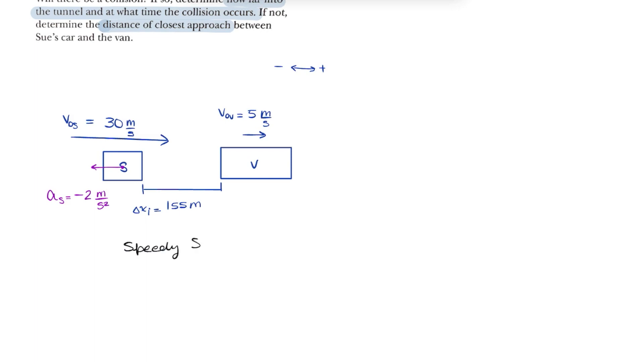So here, let's look at Speedy Sue. Her car is in uniformly accelerated motion. To analyze the situation better, we can put the starting point of Sue's car as 0 meters and the end point of the van at 155 meters.